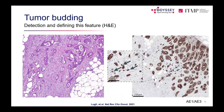Tumour budding appears as disseminated single cell clusters in H&E staining. The definition is a single cell or a small group of tumour cells up to four, found at the invasion front, dissociated from the main tumour. Buds can also be found within the main tumour body, such as on biopsy.